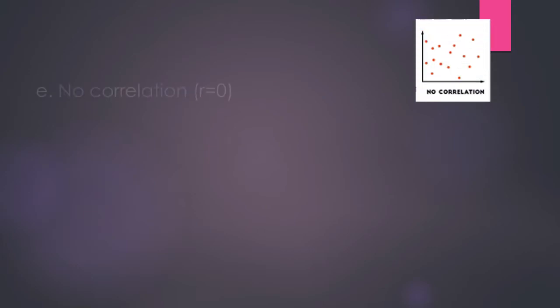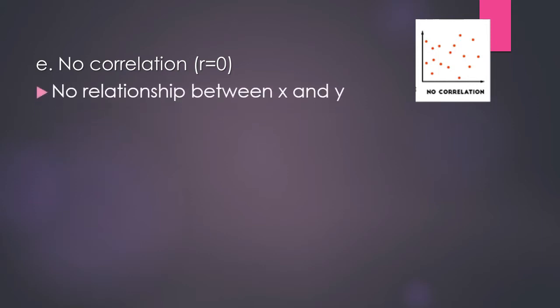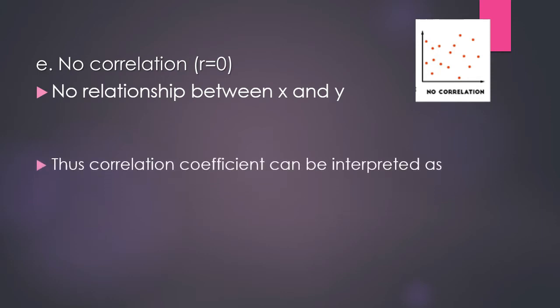The last type is no correlation, where r equals zero — there is no relationship between x and y and both variables are independent. An example is smoking habits and language of the people; there is no relationship between a person's smoking habit and their language.